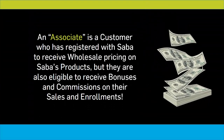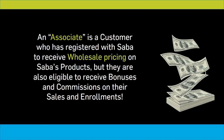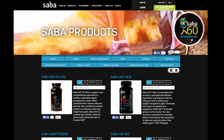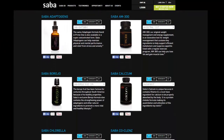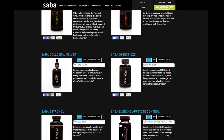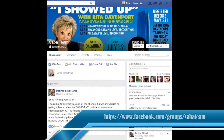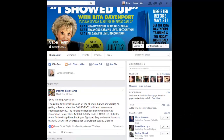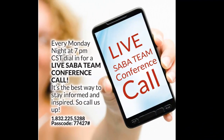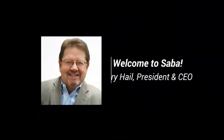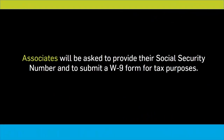An associate is a customer who has registered with Saba to receive wholesale pricing on Saba's products, but they are also eligible to receive bonuses and commissions on their sales and enrollments. They will also receive a free Saba for Life retail website where they can send their customers to place orders at retail cost and enroll as either preferred customers or associates. Additionally, associates are granted access to our private Saba team Facebook group and are encouraged to listen in on our weekly Saba leadership call hosted by our CEO and president Gary Hale.